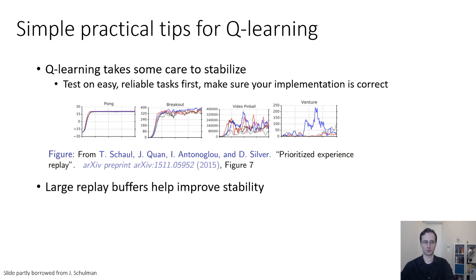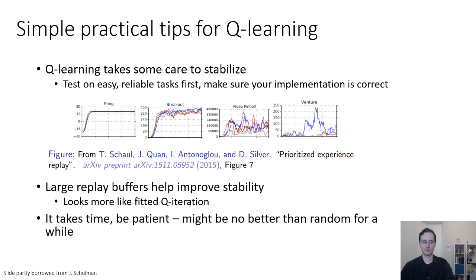Large replay buffers tend to help improve stability quite a lot. Using a replay buffer of about one million can be a pretty good choice. At that point, the algorithm really starts looking a lot more like fitted Q-iteration, which is perhaps part of the explanation for its improved stability. Q-learning takes a lot of time, so be patient. It might be no better than random for a long time while random exploration finds good transitions, and then it might take off once those transitions are found.